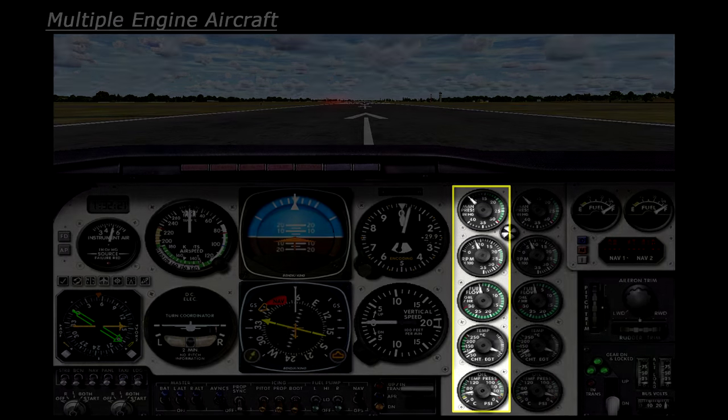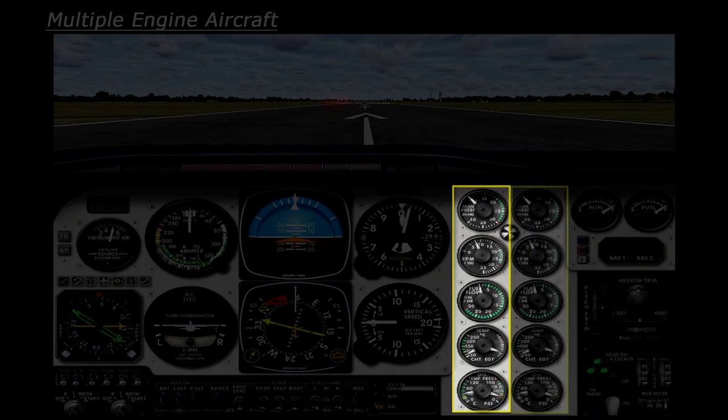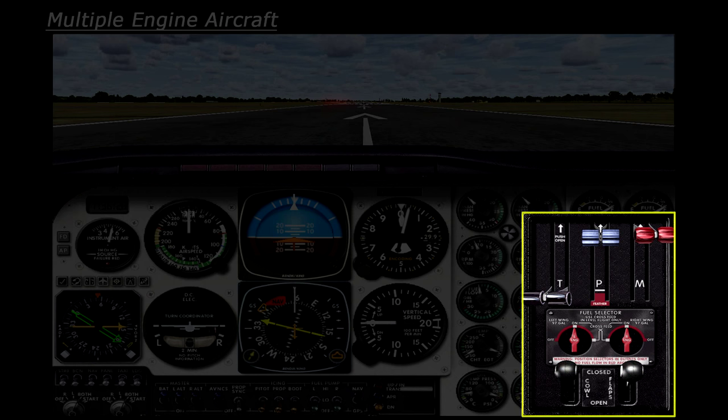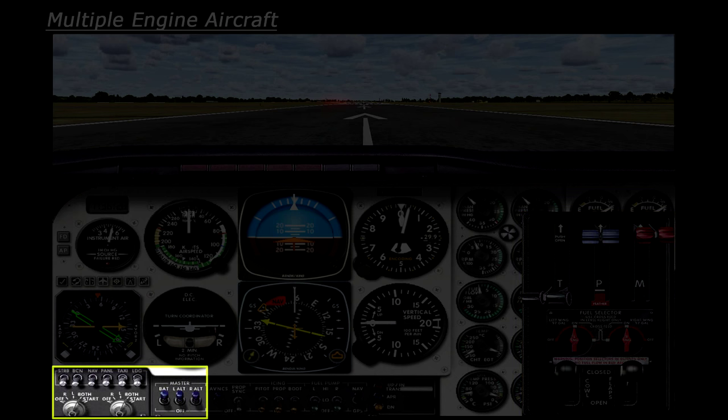If we have a look at the throttle quadrant, we have two throttle levers, two propeller levers and two fuel mixture levers. Also looking at some of the other systems, you can see that we have a slightly more complex fuel system with a cross-feed function. Down on the switch panel here you will find two engine start switches along with two alternators, one for each engine.